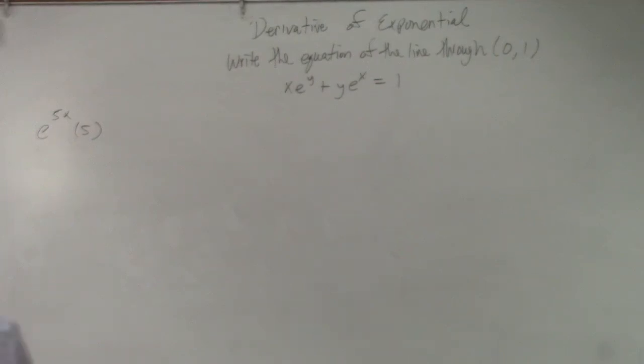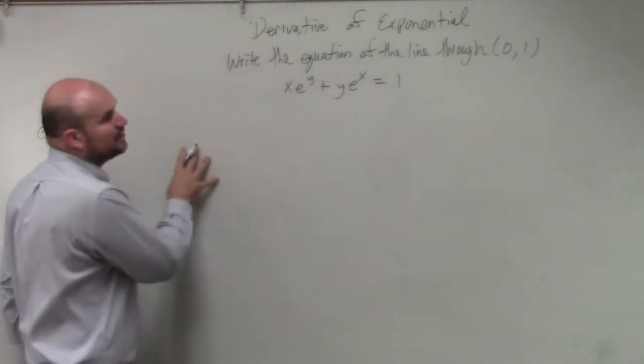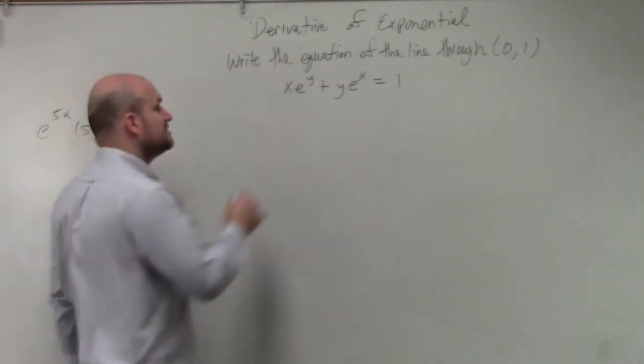So we have x times e to the y plus y times e to the x. If you guys remember, if we're going to write the equation, we can see that we have two variables, right? So we're going to use implicit differentiation.